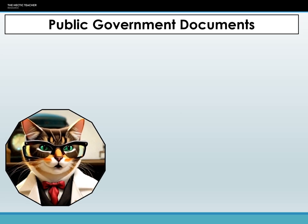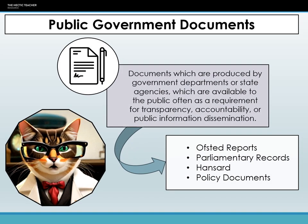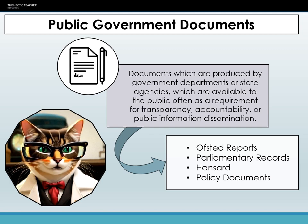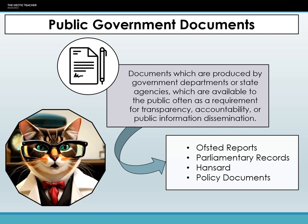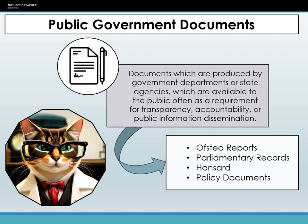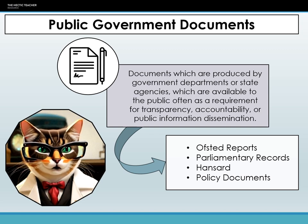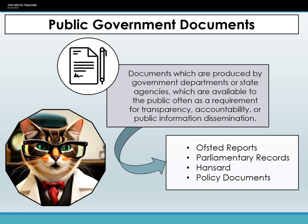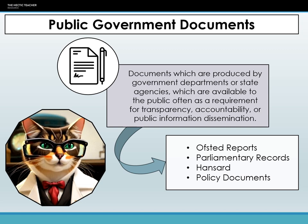Public government documents are official publications and records produced by governmental bodies or agencies. They serve various administrative, legal, and informational purposes and are made accessible to the public, often as a requirement for transparency, accountability, or public information dissemination. Within the realm of sociological research, these documents hold significant value as they offer structured insights into societal patterns, institutional structures, behaviors, and policies.